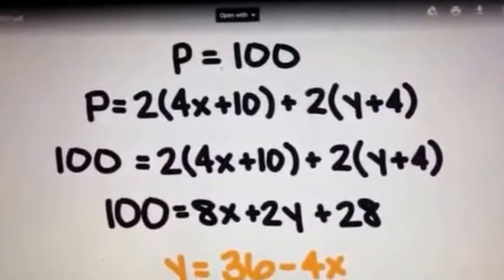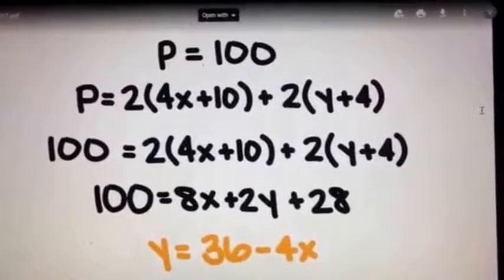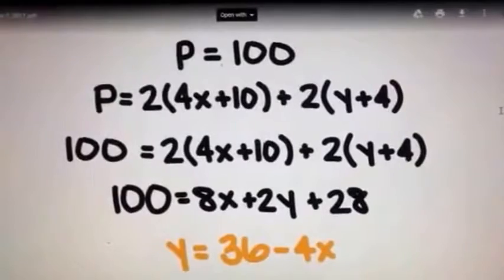She solved for the Y variable using the perimeter of 100 and found that Y is equal to 36 minus 4X.